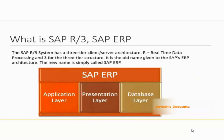What is SAP R3 or SAP ERP? SAP ERP, erstwhile known as SAP R3, is a three-tier client-server architecture. R stands for Real-Time Data Processing and 3 for the three-tier structure. It is the old name given to the SAP ERP's architecture. The new name is simply called SAP ERP.